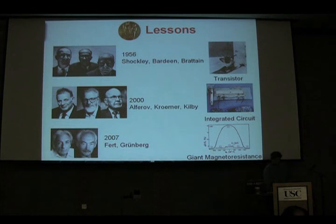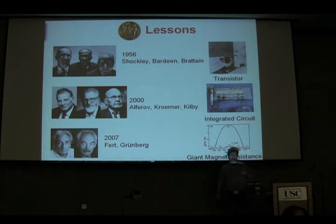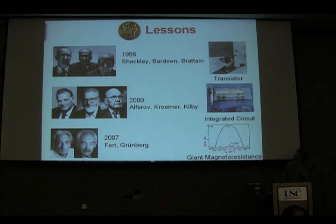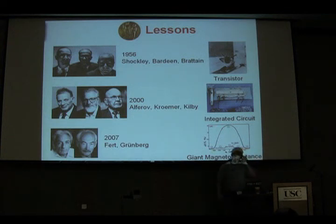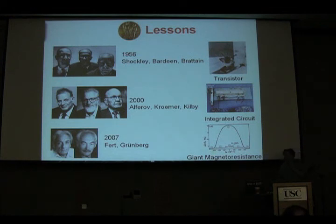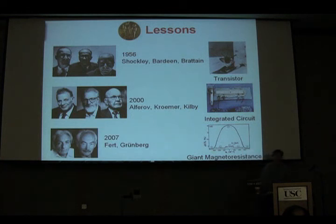I wanted to give a tutorial which had at least some motivating theme that would hopefully motivate coming into the next tutorial, which would talk about experiments and quantum error correction. I put up here three Nobel Prizes — 1956, 2000, and 2007 — for the invention of the transistor, the integrated circuit, and giant magnetoresistance. All of these are really about error correction and why we can build systems that robustly compute.